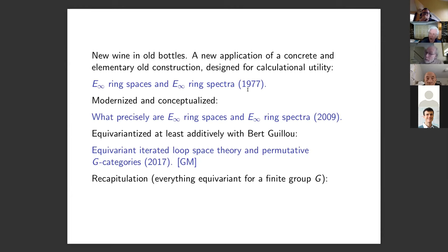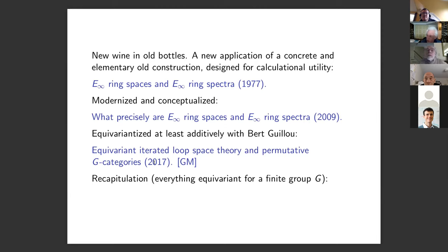That 1977 book provided a way of constructing E-infinity ring spectra from E-infinity ring spaces. Everybody knows nowadays what E-infinity ring spectra are, but not many people know precisely what E-infinity ring spaces are. I reviewed and modernized that book a few years ago, and equivariantly this was reworked with Bert Guiu in 2017 work that we'll be following up.